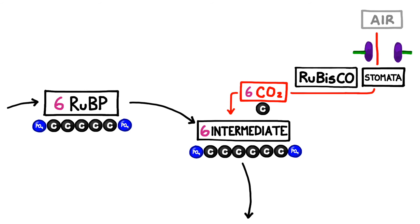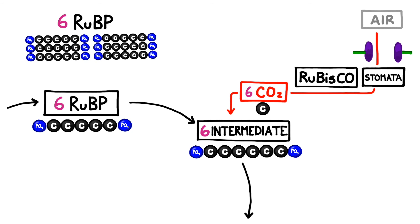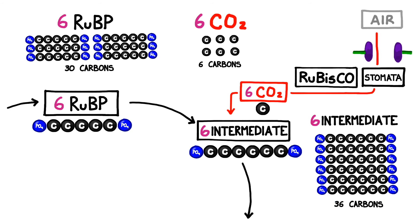The six RUBP molecules contain 30 carbons, and the six CO2 molecules contain six carbons in all. When we add them together, we still have 36 carbons, but now arranged in six groups of six.